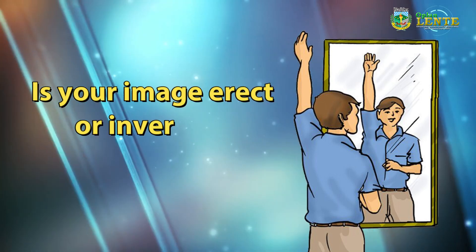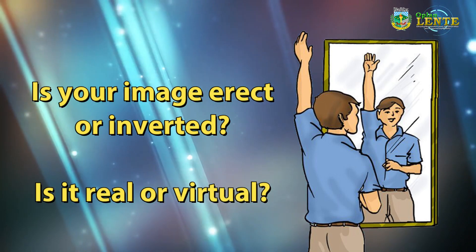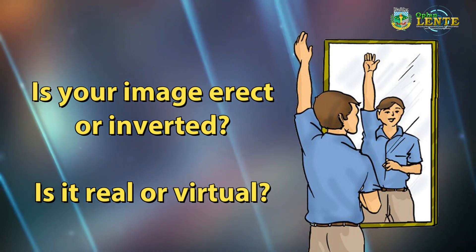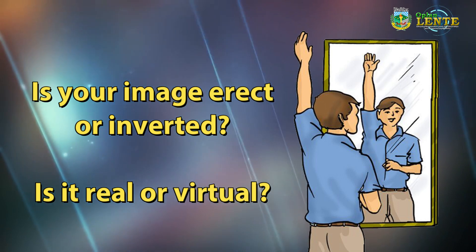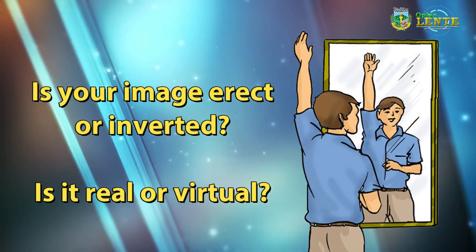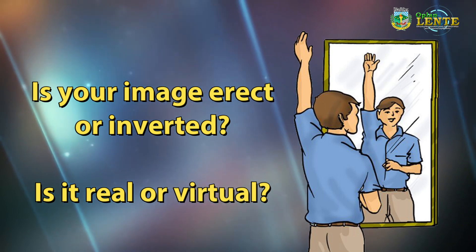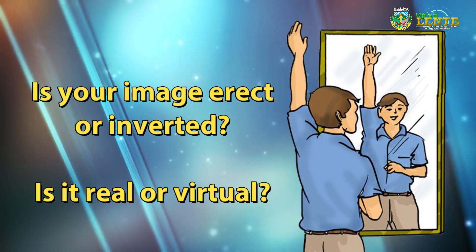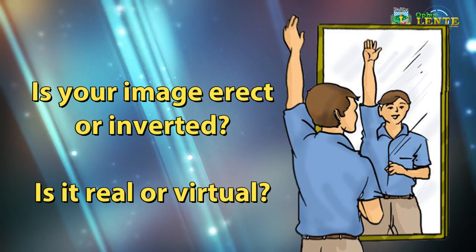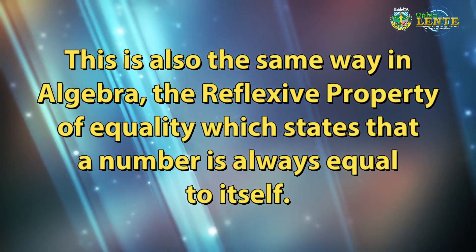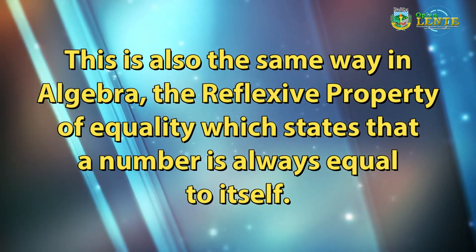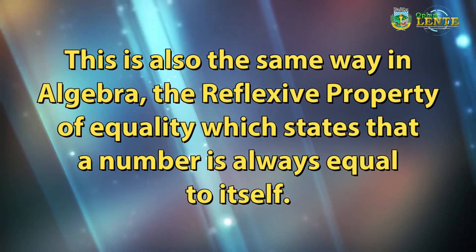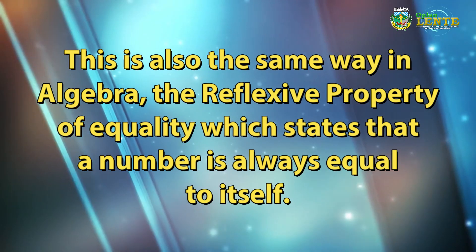Is your image erect or inverted? Is it real or virtual? Your image is erect or upright, and it is virtual. Why virtual? Because it seems that your image is behind the mirror. This is also the same way in algebra — the reflexive property of equality, which states that a number is always equal to itself.